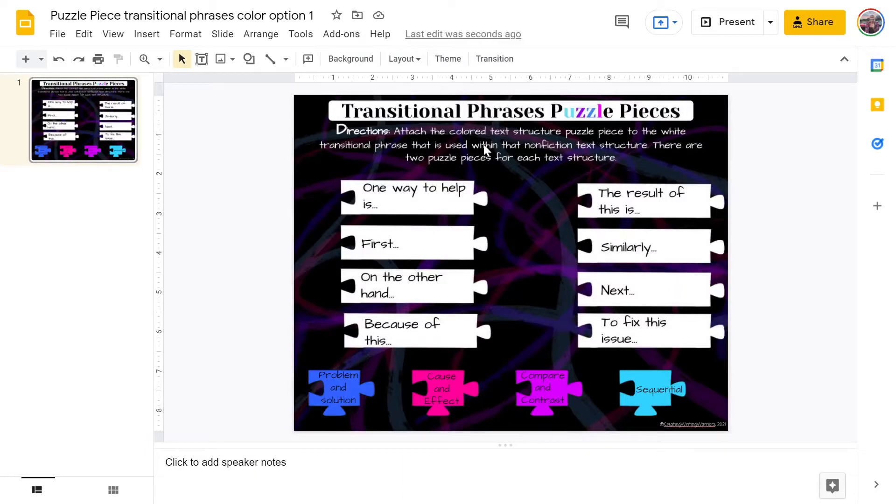Here we have the Determining Text Structures Using Transitional Phrases Puzzle Piece activity. The reason I chose to create this activity was because as students progress through the elementary grades, their expectation for the purpose of their writing increases. From kindergarten to second grade, we see students creating narratives for their fiction writing and opinion pieces for their non-fiction writing. Then from third through fifth, the focus shifts to opinion pieces and informative texts.